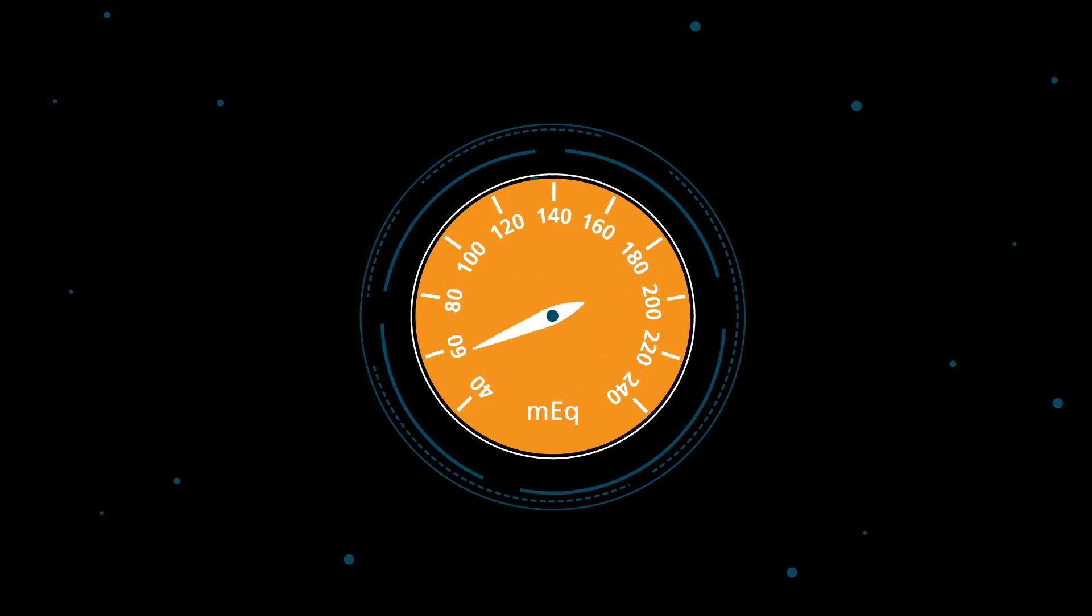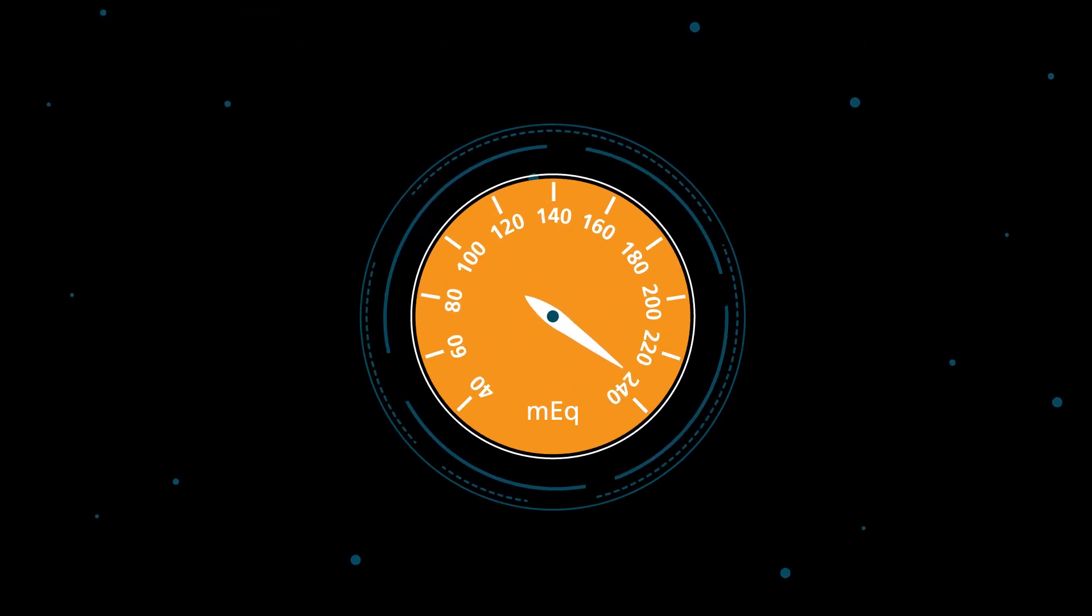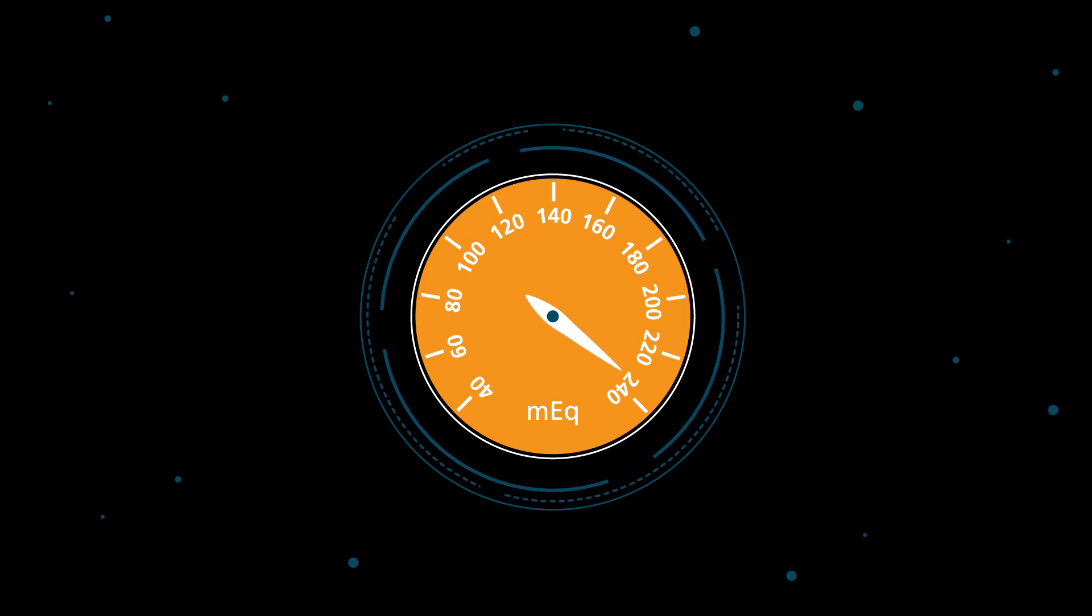Adjusting DEB to 240 millequivalents per kilogram can give performance gains of up to 4-7% in layers, broilers and fattening pigs.